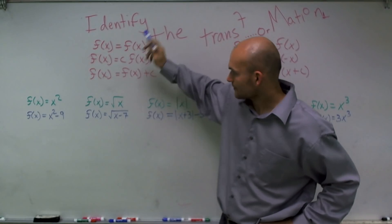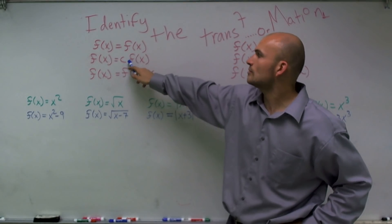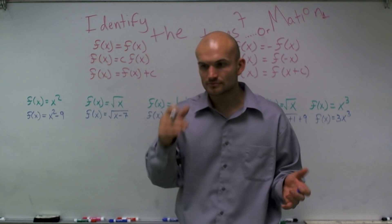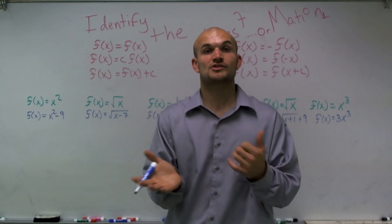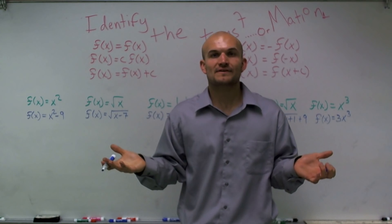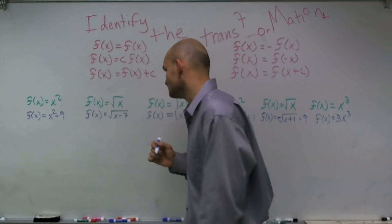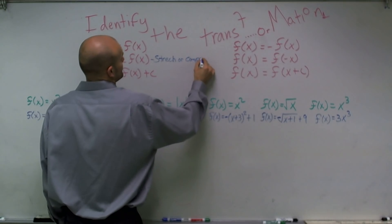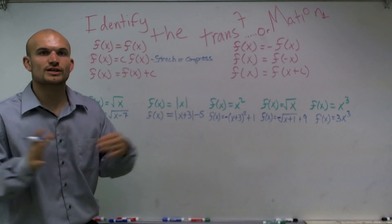If I have c in front of my function, that's going to work as either expanding or shrinking your function — it depends on the size of c. Sometimes it will expand the function, and sometimes it will compress it. So when you have a number in front, that's going to stretch or compress your graph.